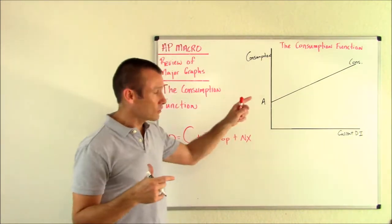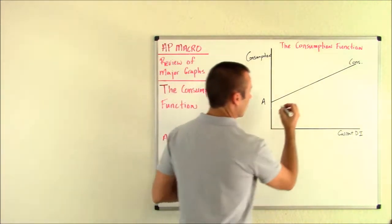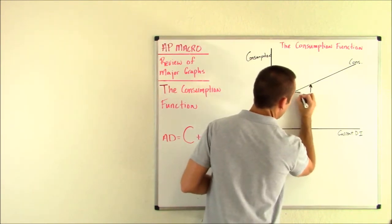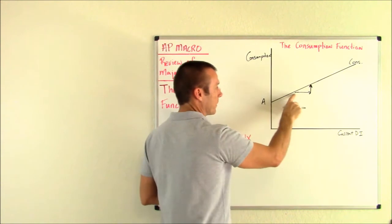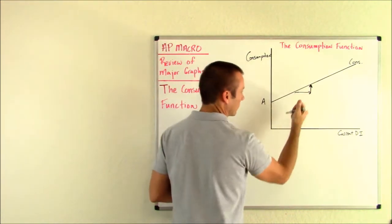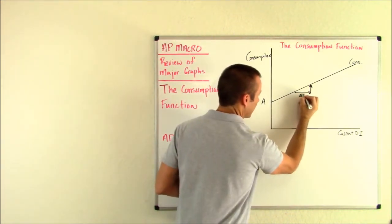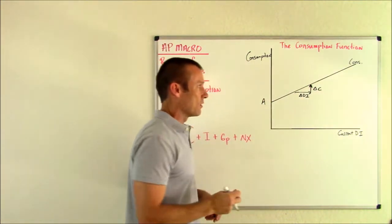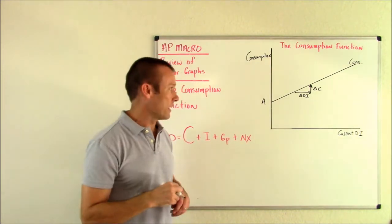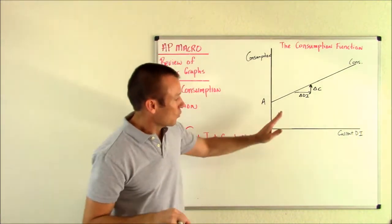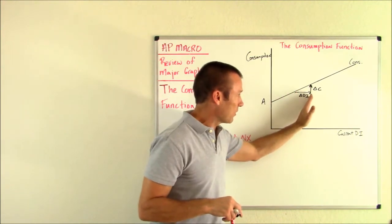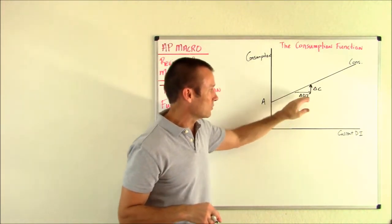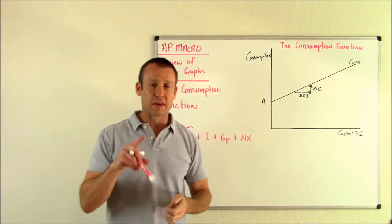So what is the slope of this curve? Well, remember, that is rise over run. So when our independent variable changes by some amount, our delta DI, we're going to get our consumption to change by a certain amount, delta consumption. When current disposable income changes by some amount, current consumption is going to go up by a certain amount. So we're looking at delta DI, delta C.